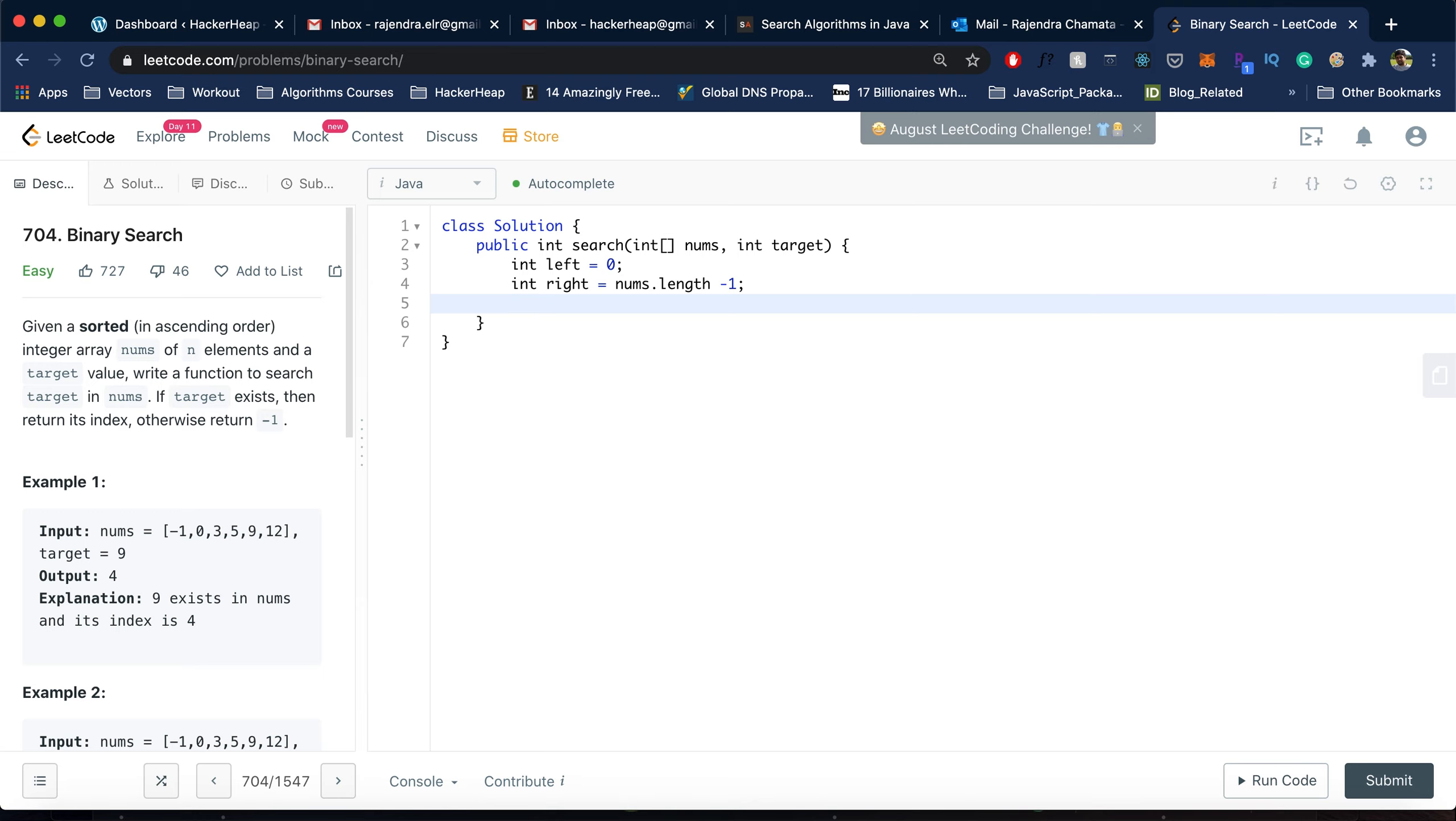We need to divide the array until the left index is less than or equal to right, because if it's greater that means we didn't find the element and we will return minus one. So while left less than or equal to right, I find a mid which is left plus right by two.